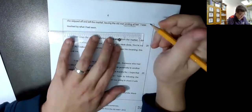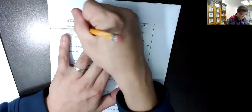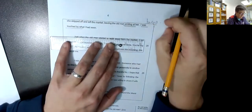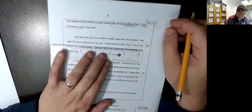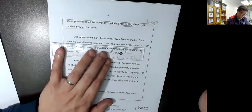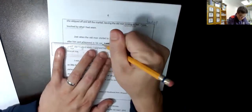I was touched. I was touched by, 被動句, B加PP. What I had seen. Just when the old man started to walk away from the market, I ran after him and whispered. Whisper 就是細聲講, 細聲講話當然是靠近耳朵了, so whisper in his ear.